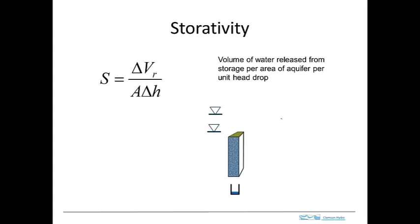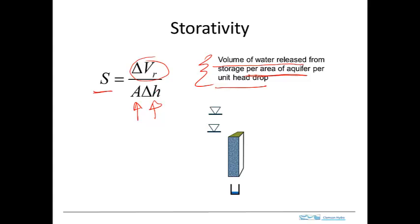Storativity is an important concept for describing this overall process. By definition, storativity (S) is the volume of water released from storage per unit area of the aquifer per unit drop in head. It's important to note this is per decrease in head — not just any change — because the volume is released from storage when the head decreases, which makes the overall quantity positive.